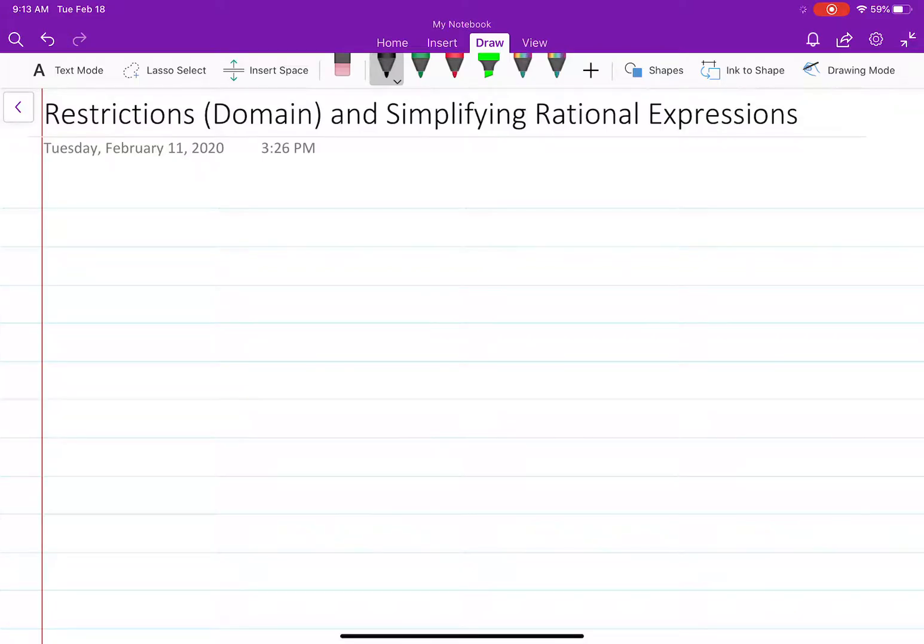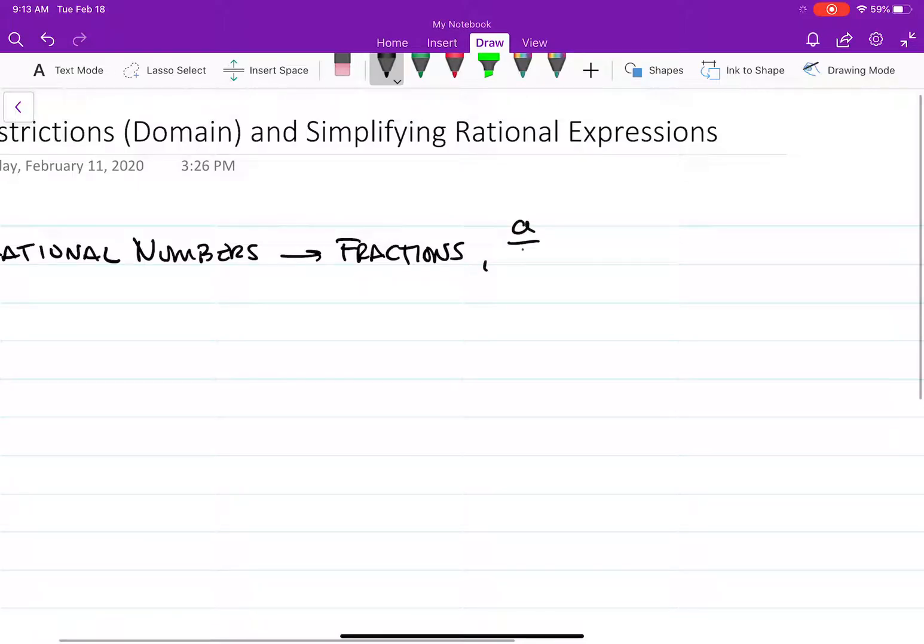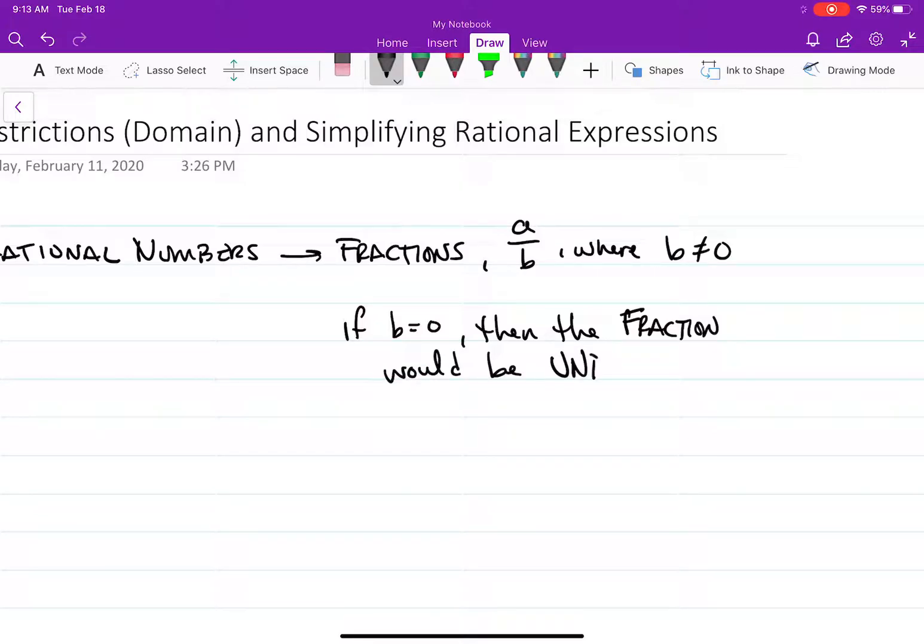Okay, so today we're talking about restrictions or finding the domain and also simplifying rational expressions. Before we start, let's talk about what rational expressions are, or better yet, rational numbers are. Rational numbers are fractions, so we'll call it a divided by b, where b cannot equal zero. Because if b was equal to zero, then the fraction would be undefined.